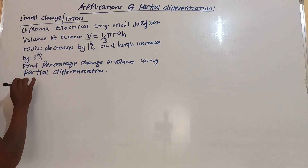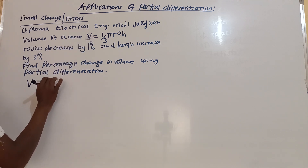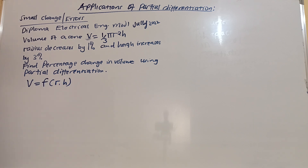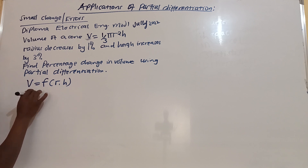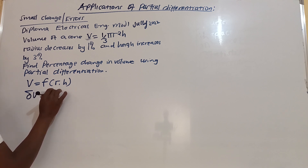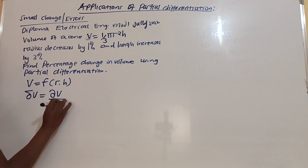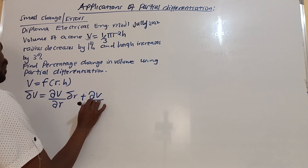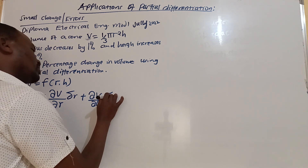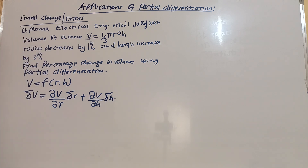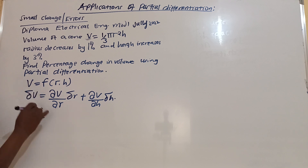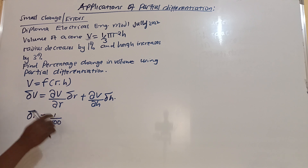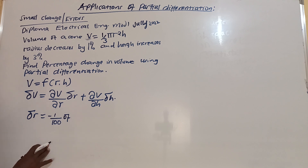Volume is a function of radius and height. In partial differentiation, the change in the dependent variable V is given by the partial derivative of volume with respect to r, times the change in r, plus the partial derivative of volume with respect to h, times the change in h. The change in r equals a decrease of 1%, which is -r/100 of the original radius.